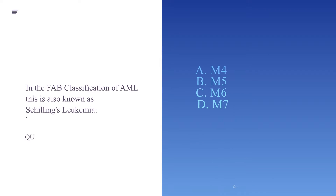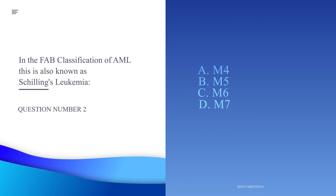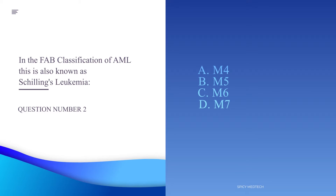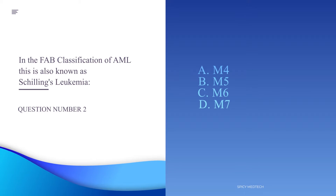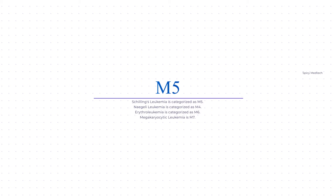Number two: In the FAB classification of AML, this type is also known as Schilling's leukemia. A. M4, B. M5, C. M6, or D. M7. The answer is letter B, M5. M5 is also known as Schilling's leukemia. M4 is known as Naegeli leukemia. M6 is known as DiGuglielmo syndrome or erythroleukemia. And M7 is known as megakaryocytic leukemia.